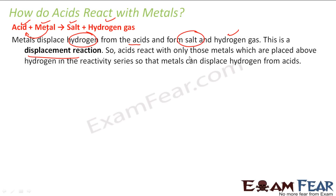Acid reacts with only those metals which are above hydrogen in the reactivity series. Please note. We have defined the activity series in the periodic table. We can say in layman's terms that metals which are more active than hydrogen can displace it.